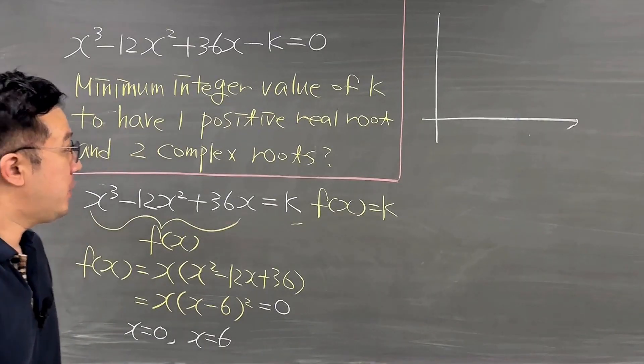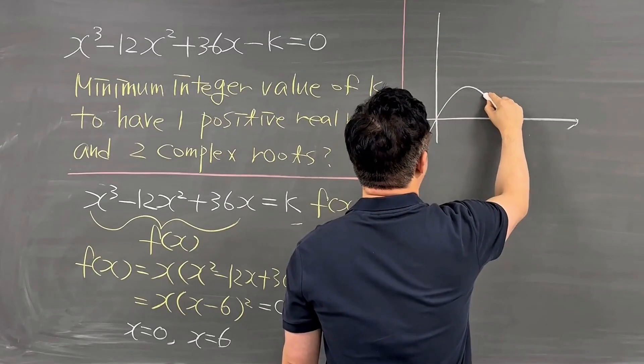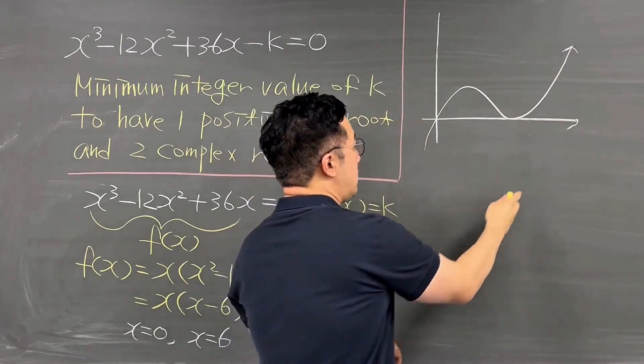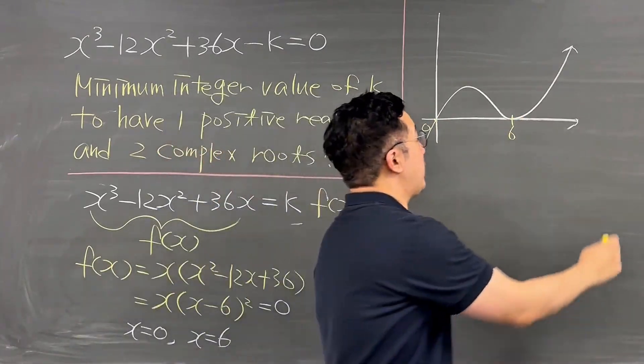Okay, so that's why we can draw your cubic function looks like this. We have a bounce when x is equal to 6 here. Okay, so we have 0. This is a graph of your f(x).